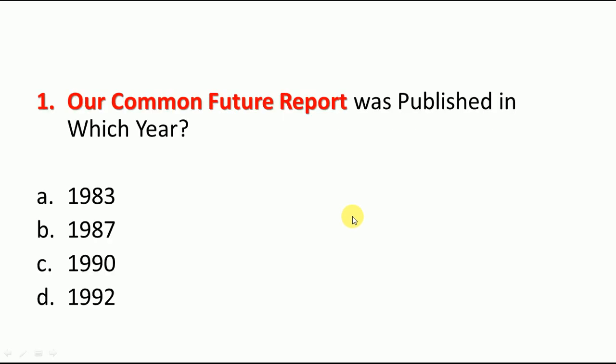So the first question for you: the Our Common Future report — in which year was it published? I hope all students have answered this. The correct answer is 1987. The Brundtland Commission was formed in 1983, and the first report it published, Our Common Future, was published in 1987. Remember this.